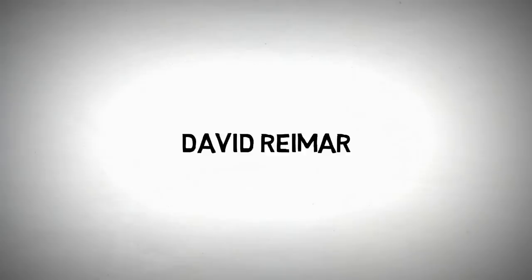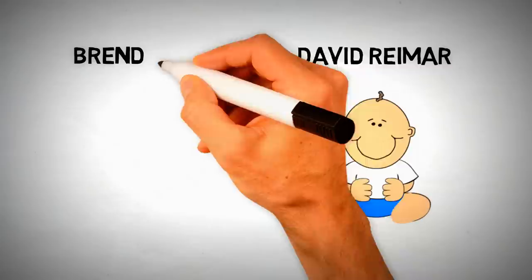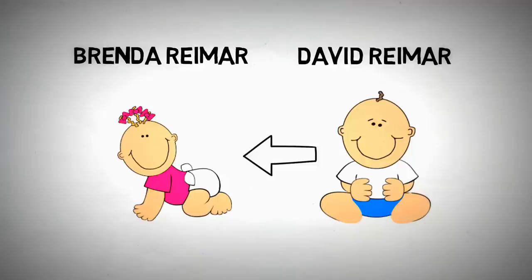Another argument is based on a story of a boy named David Reamer whose circumcision went horribly wrong. He was given sex reassignment surgery at 22 months old and was raised as a girl named Brenda. Brenda was given girl toys but always seemed to gravitate toward more traditionally boy toys.